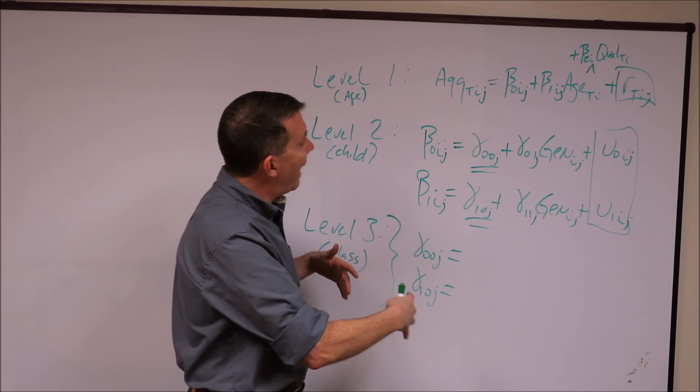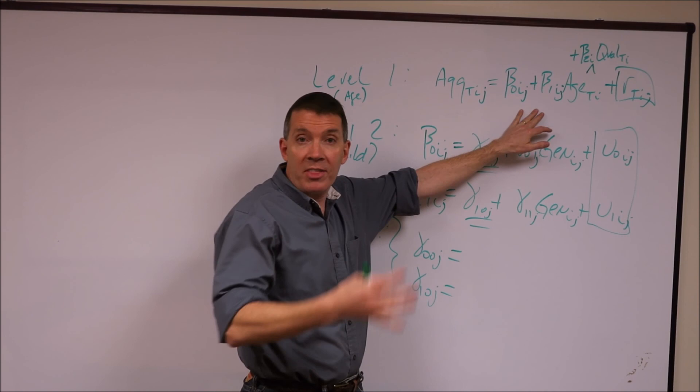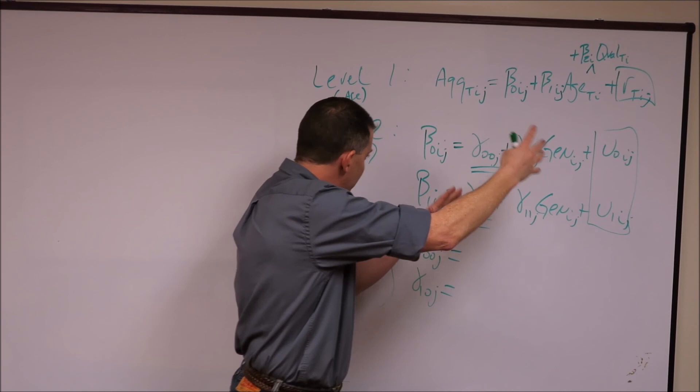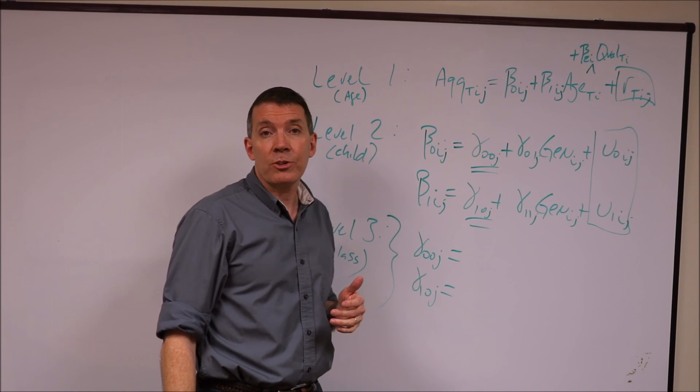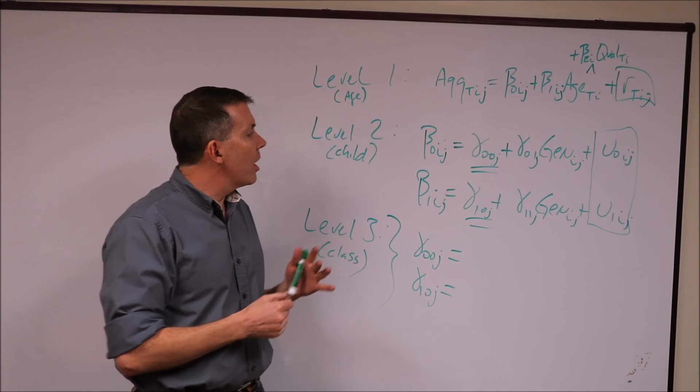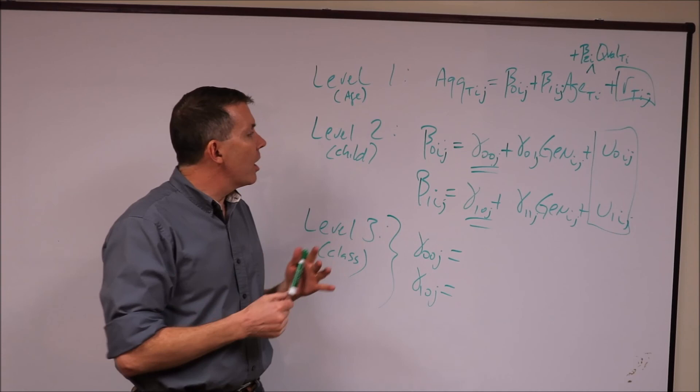This has been a brief review of how to estimate a growth model within a multi-level framework. The general rule is: at level one, write the equation for within-unit change; whatever varies randomly over the next level of units, write an equation for that at level two. If there is no higher-order nesting, stop at level two; if there is additional nesting, keep writing equations at level three and beyond, as long as the data support it. I hope that's been of some use — thank you very much for your time.